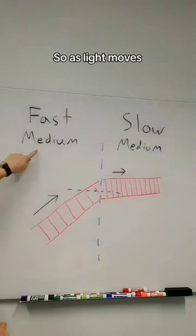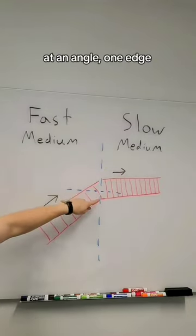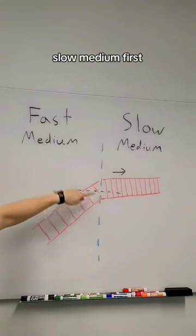So as light moves from that fast medium to the slow medium, if it's coming in at an angle, one edge of it hits the slow medium first.